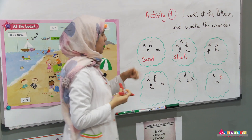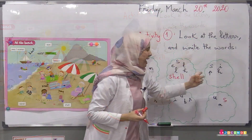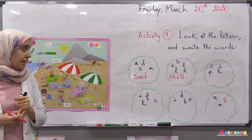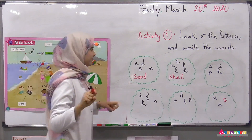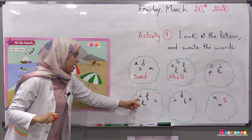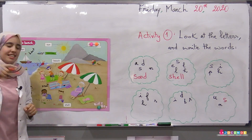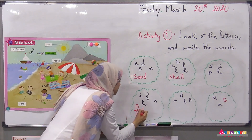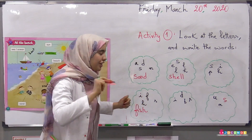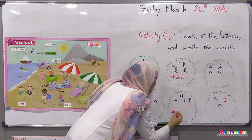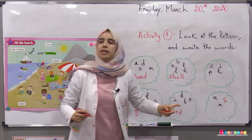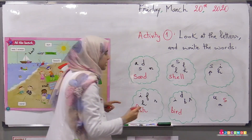Let's move to the next word: H-F-I-S — yes, it's easy! It's a fish. And here we have B — yes, it's bird. B-I-R-D. And here we have U-N-S — it's a sun. Great, it's a sun!